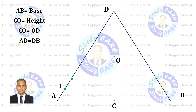Now divide the line AD into equal parts and give names 1, 2, 3, 4, and so on. In the same way, divide the line DB into equal parts and give names accordingly.